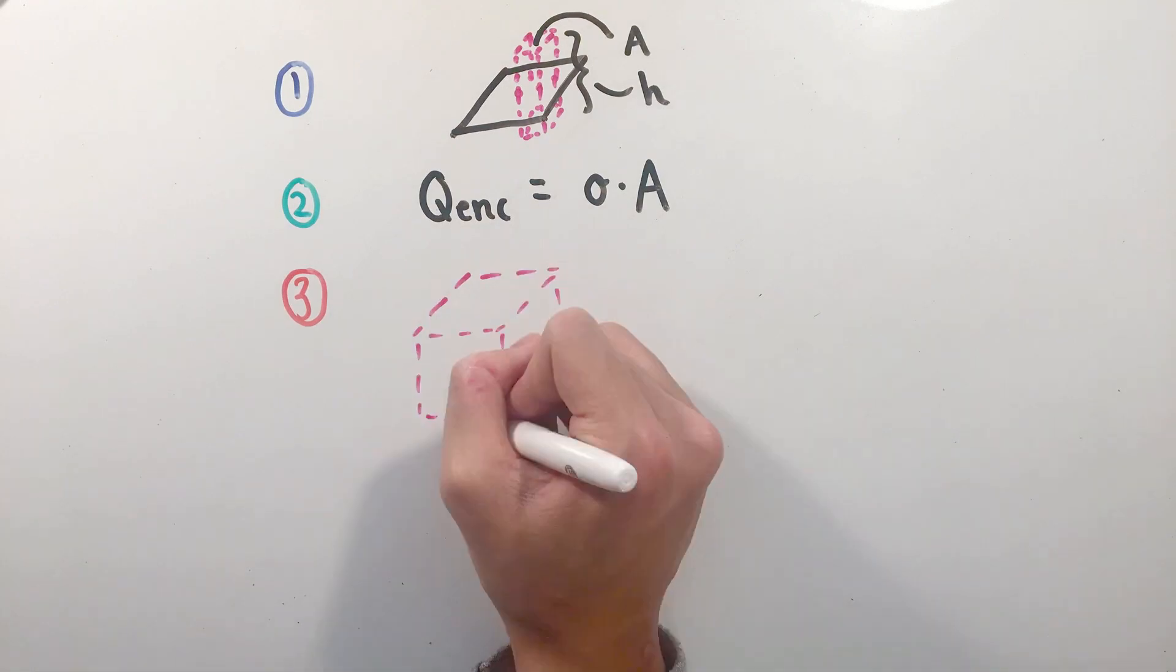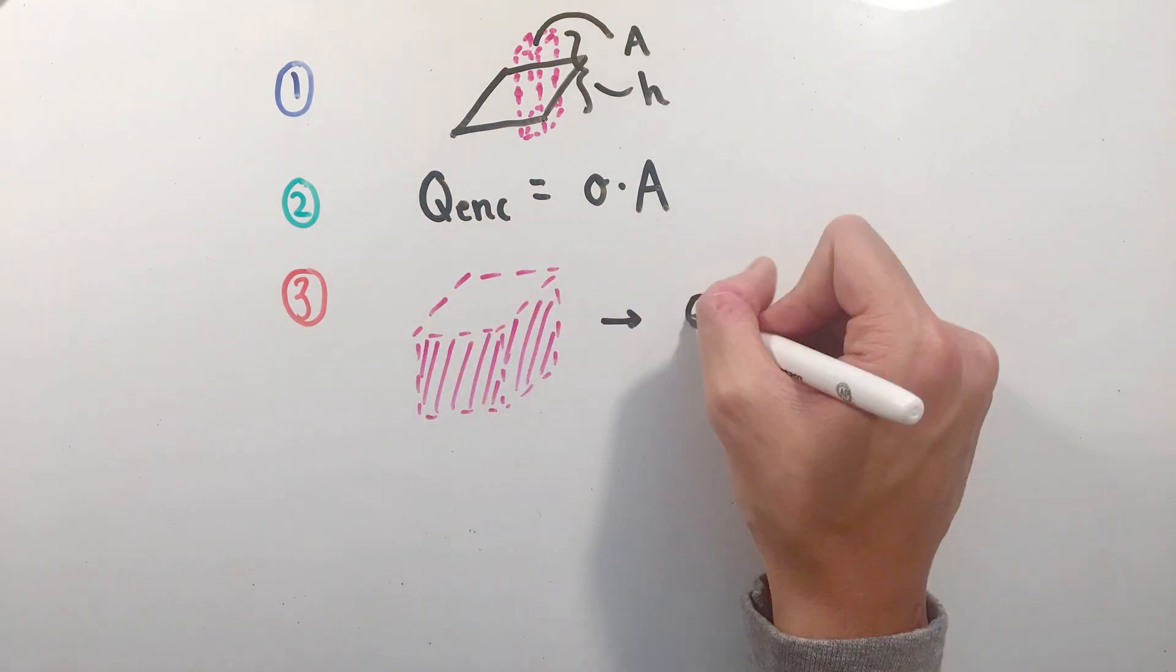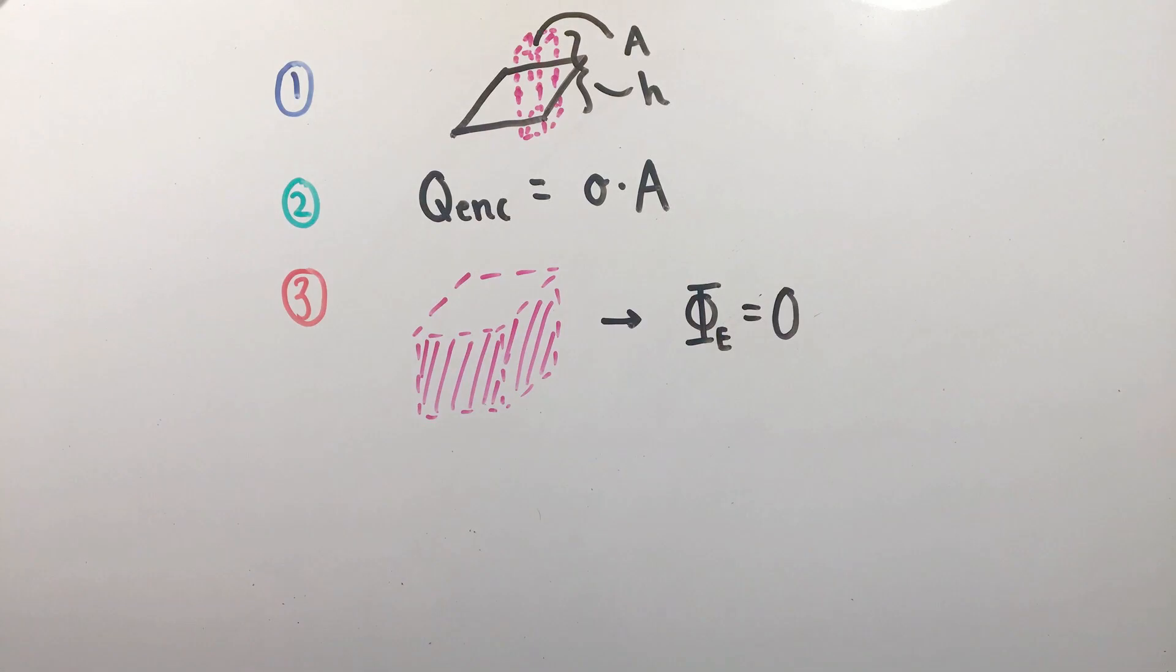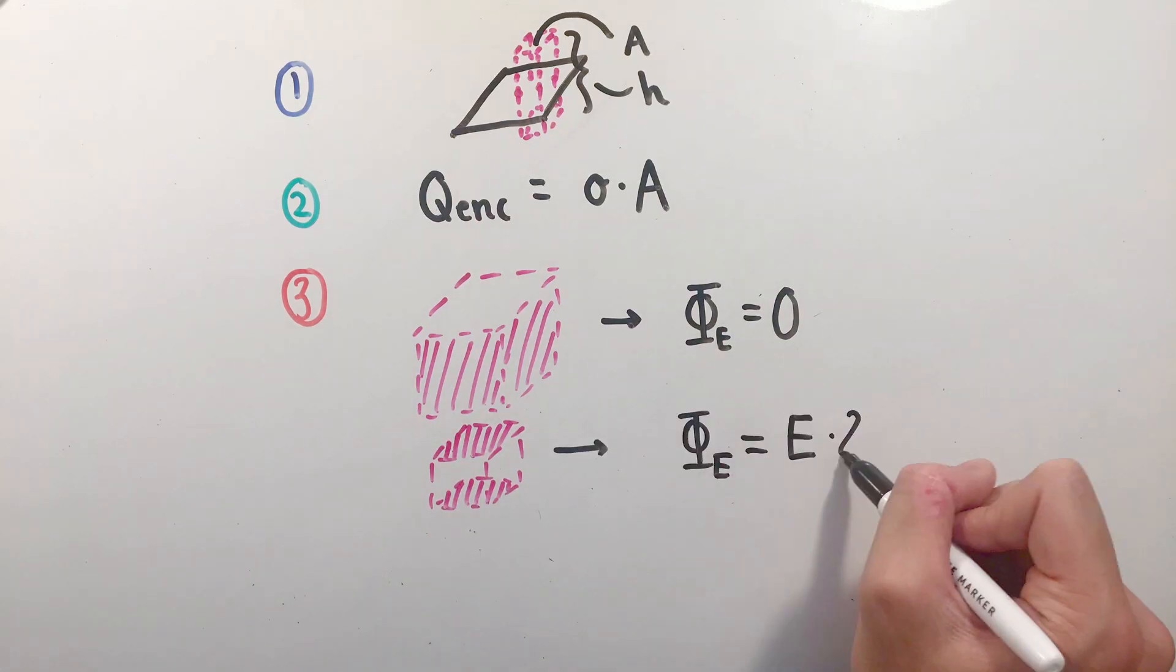we can notice that all lateral sides of our box will, once again, have perpendicular E and A vectors, making the flux through them 0. The only faces where electric field lines would penetrate would be the two top and bottom faces, making our total flux E times 2A.